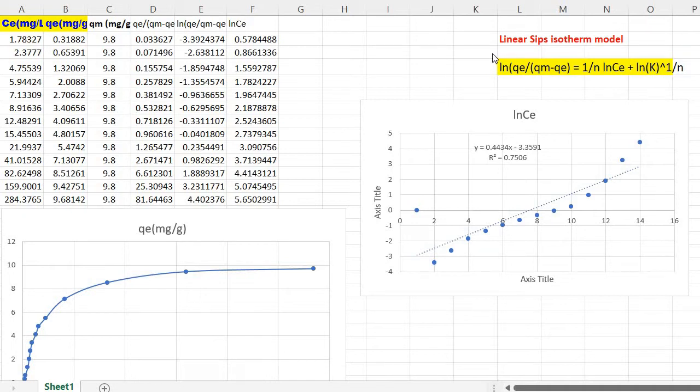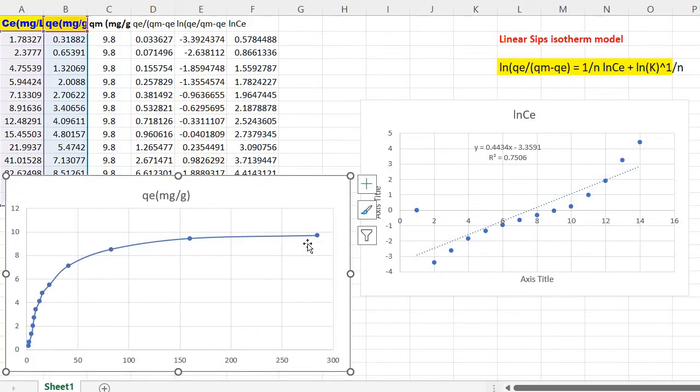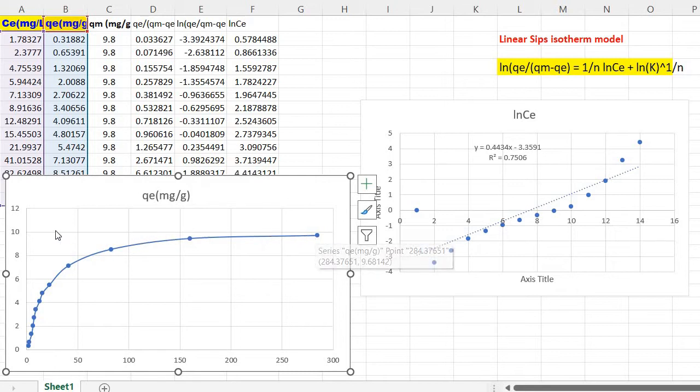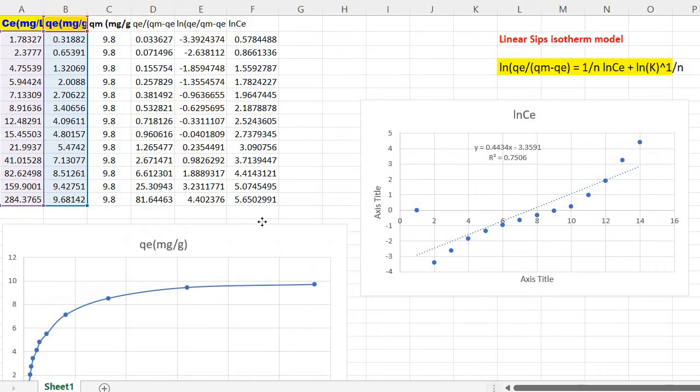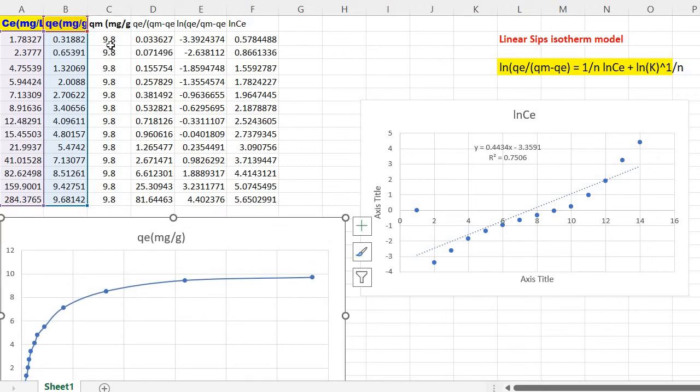In order to fit, at first we need to calculate QM. So in order to calculate QM, at first we need to plot QE versus CE. I have done so here. Then you need to extrapolate this to Y axis to determine QM theoretical which is 9.8.